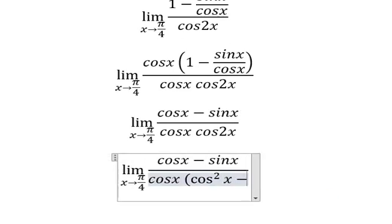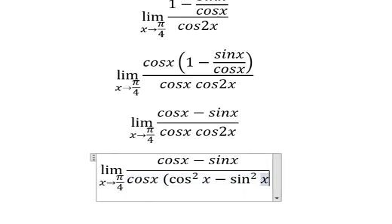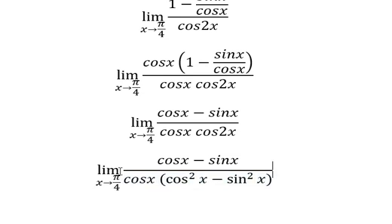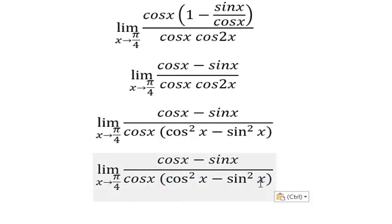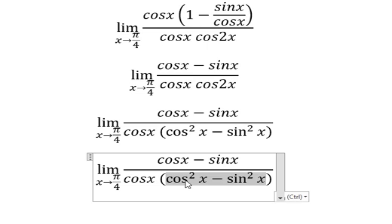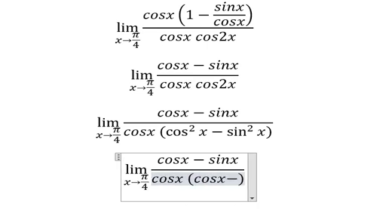Next, for cos(2x), we have cos²(x) minus sin²(x). This is the identity, so we have cos(x) minus sin(x) multiplied by cos(x) plus sin(x).